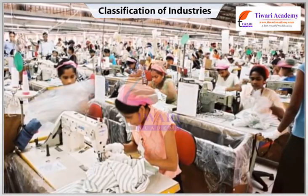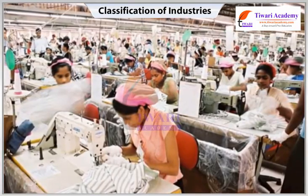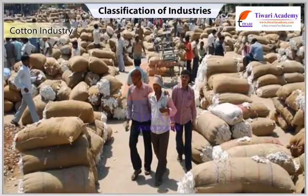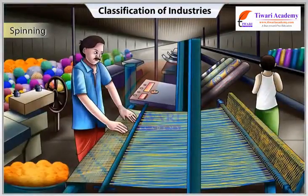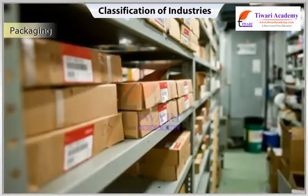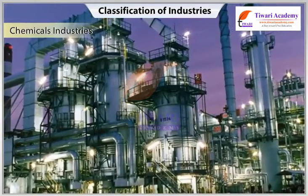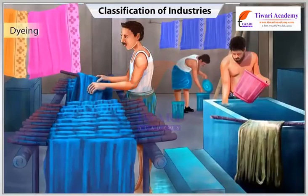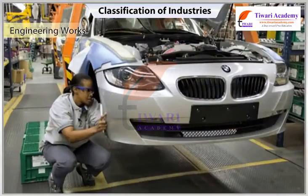Today Maharashtra, Tamil Nadu, and Gujarat lead the country in cotton textiles. The ready-made cotton garments industry has been developing fast to cater to foreign and domestic needs. The cotton industry provides livelihood to farmers and workers engaged in ginning, spinning, weaving, dyeing, designing, packaging, tailoring, and sieving. It also supports many other industries such as chemicals and dyes, mill stores, packaging materials, and engineering works.